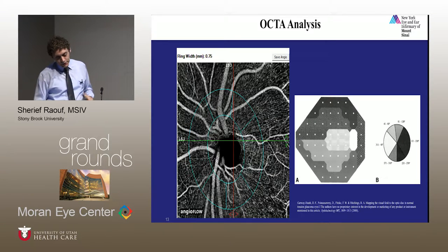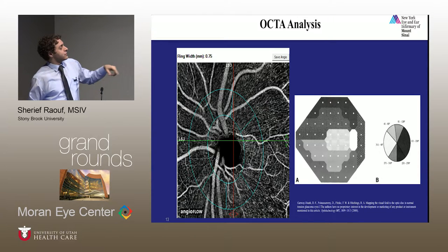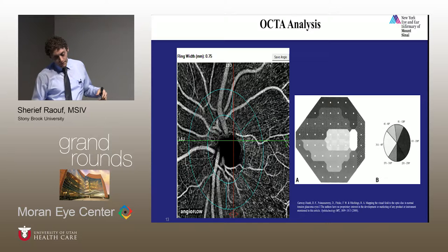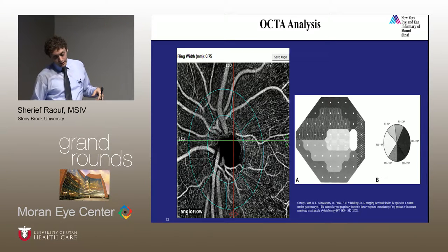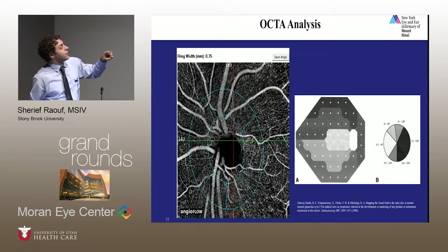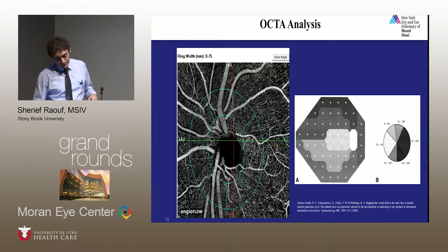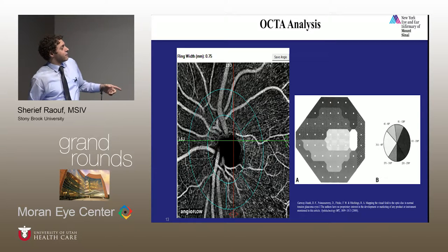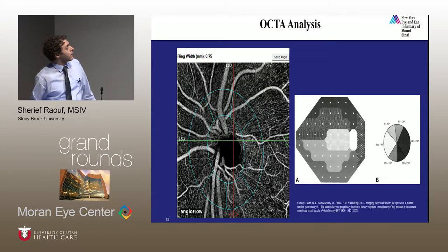The basis for the sectors shown around the optic disc are derived from work by Garway-Heath, which determined where RNFL defects and prominent bundles converge on the optic disc. The peripapillary region is divided into six sectors that were the basis for that work.